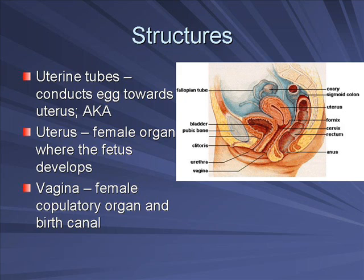There's a structure not on this slide that's in between called the cervix. 'Cervic' means neck — the cervix is the junction between the vagina and the uterus, and it's called the cervix because it is the neck of the uterus. That's how it got its name.